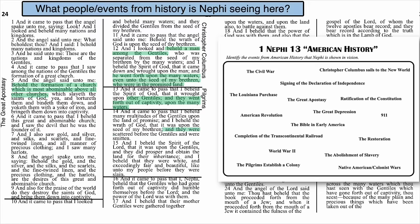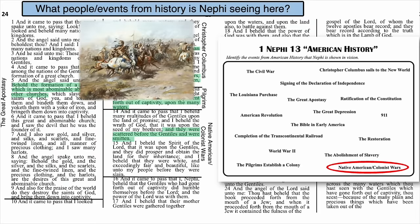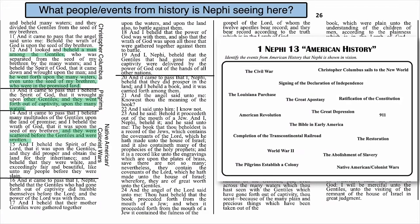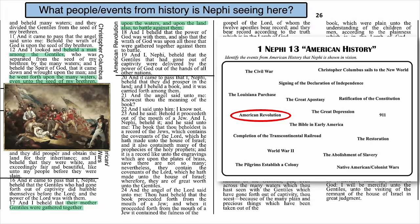'And it came to pass that I, Nephi, beheld that the Gentiles who had gone forth out of captivity did humble themselves before the Lord, and the power of the Lord was with them. And I beheld that their mother Gentiles were gathered together upon the waters, and upon the land also, to battle against them. And I beheld that the power of God was with them, and also that the wrath of God was upon all those that were gathered together against them. And I, Nephi, beheld that the Gentiles that had gone out of captivity were delivered by the power of God out of the hands of all other nations.' What's Nephi seeing here? The mother Gentiles — Great Britain — came against the colonists to battle, and the colonists were delivered. It's the American Revolution.